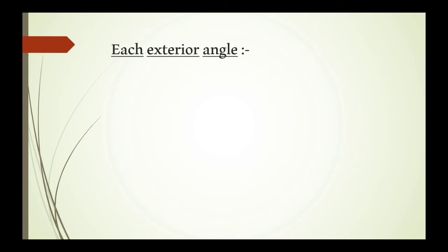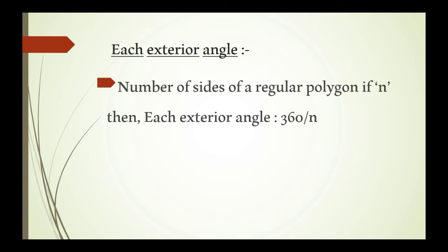Next, each exterior angle. We have learned about sum of exterior angles — that means adding all exterior angles. Each exterior angle means finding one exterior angle. For a regular polygon with n sides, the formula is: each exterior angle equals 360 divided by n, where n is the number of sides.